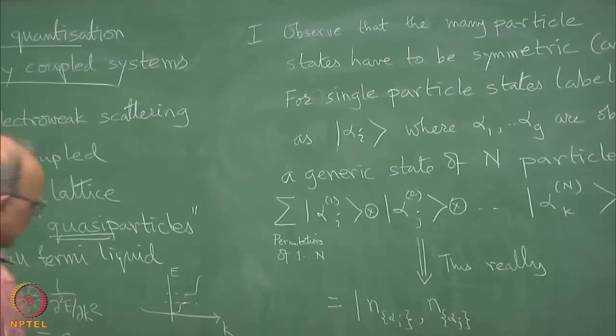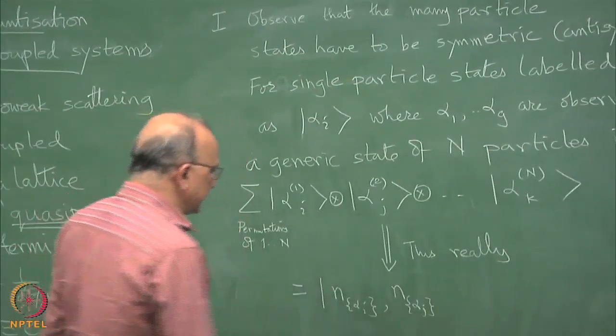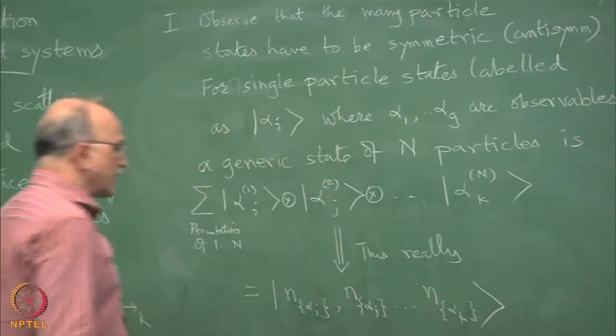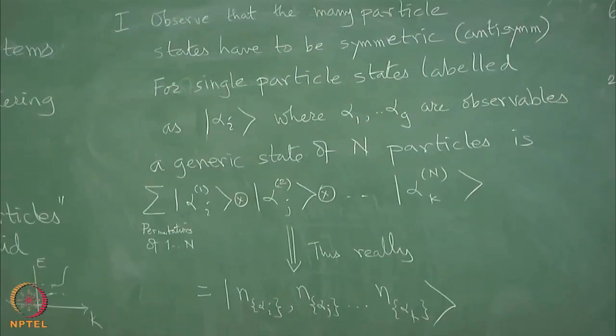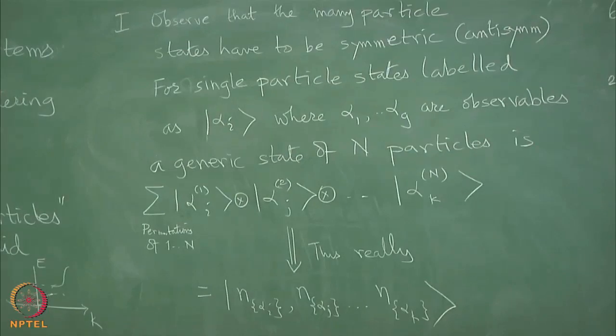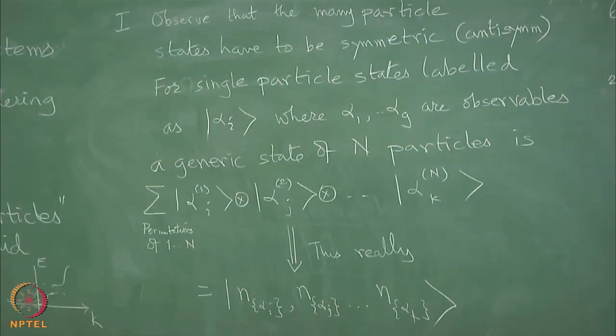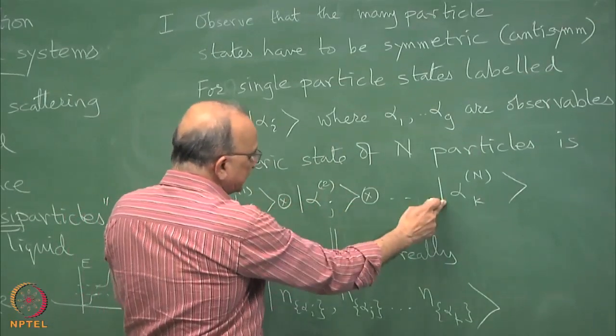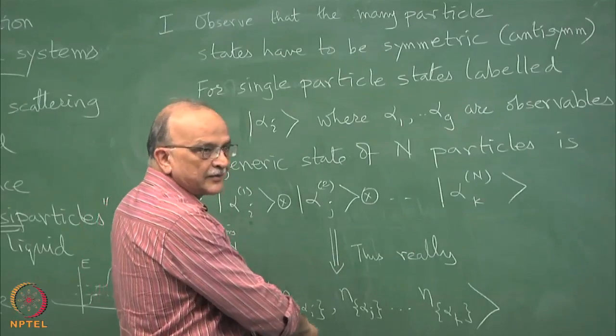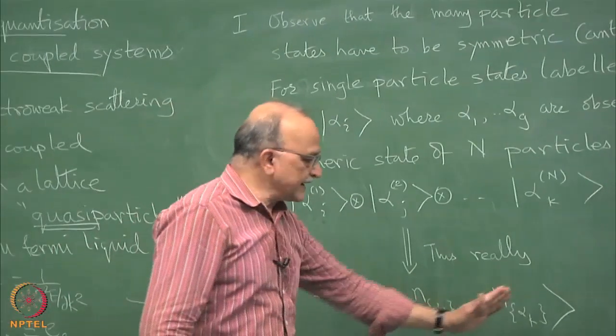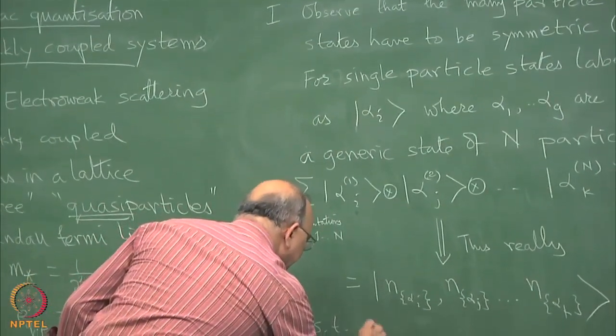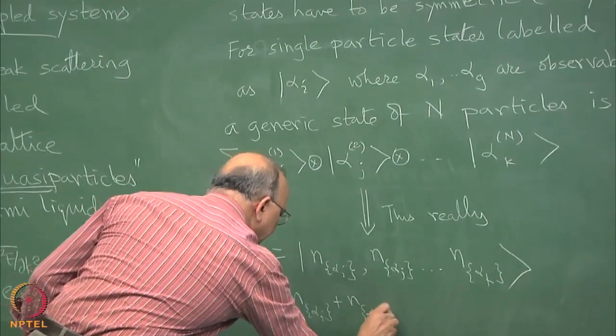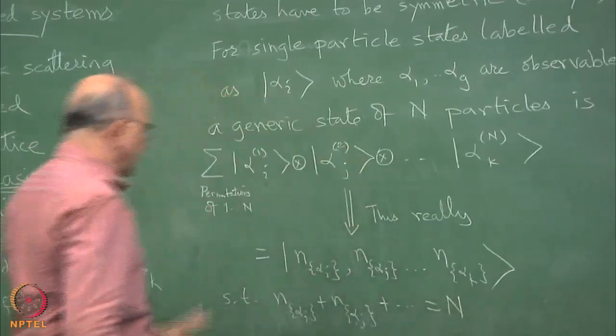What this means is that thus really this is simply equal to n alpha i, n alpha j. In other words, the states are labeled by how many particles there are in a particular quantum numbers, set of quantum numbers. You cannot tell number 1 is with alpha i, but number 2 is with alpha j. All you can do is count. So if alpha i recurs anywhere else, all you have to do is say well there are 5 of these that carry this quantum number, 7 of these that carry this quantum number. So the states are labeled by this such that of course, the n alpha i plus you know this adds up to n that is all you have.